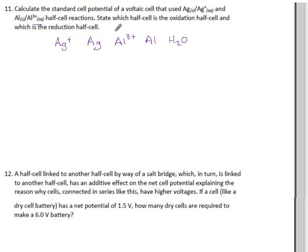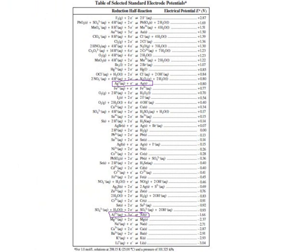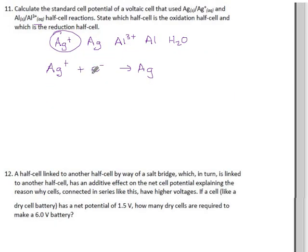So our reduction reaction with our oxidizing agent is this. You write it as-is because the silver ion is our oxidizing agent — that's our top reaction. And the bottom reaction, which starts with aluminum metal, goes Al into Al³⁺. It oxidizes to aluminum ion and releases three electrons along the way.